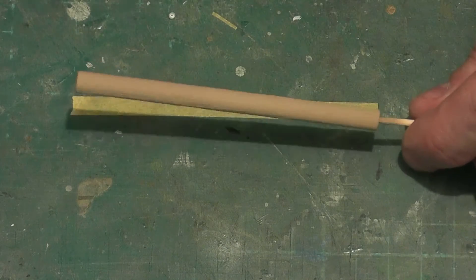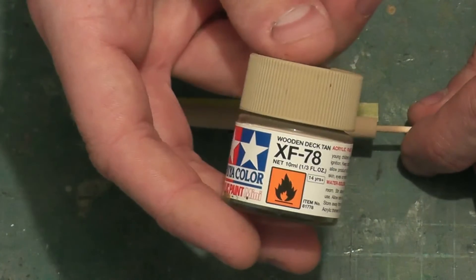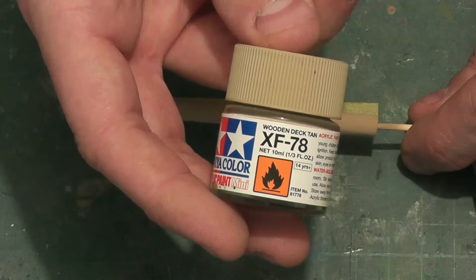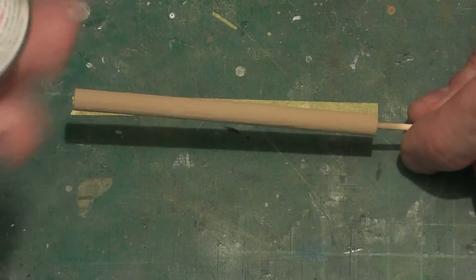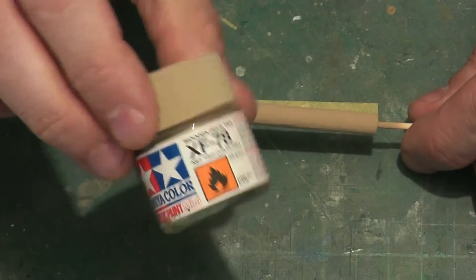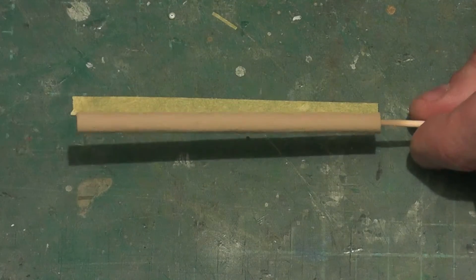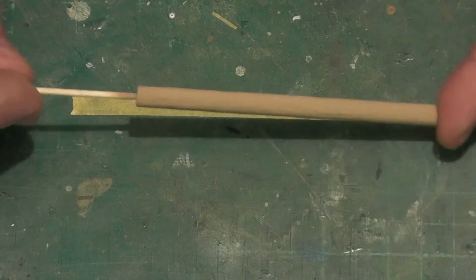10 or 15 minutes ago, I gave it a good heavy coat of XF78 Wooden Deck Tan from Tamiya. I thinned it with a bit of lacquer thinner, gave it a quick spray, and here we are with what you see here.